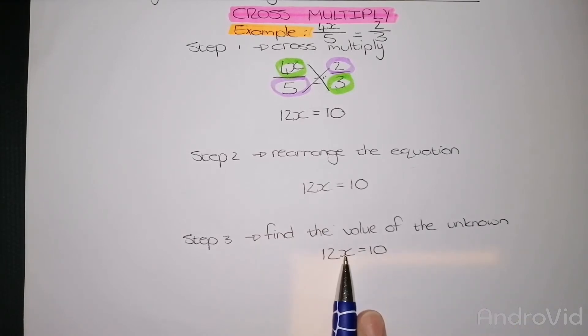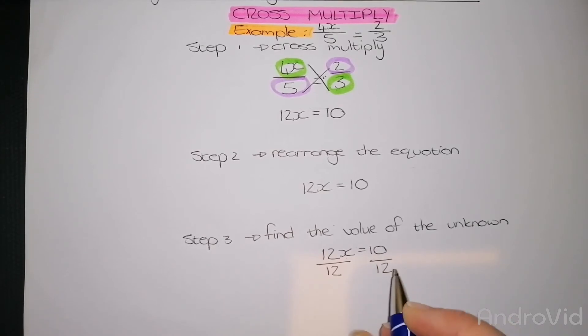I need to have x alone. To get x alone, I need to get rid of this 12. I need to do the opposite of what the 12 is doing at this stage. Right now the 12 is multiplying by x. The opposite of multiplication is division. Divide by 12 on the left. What I do on the left, I need to do on the right, so I need to divide by 12 on the right as well.